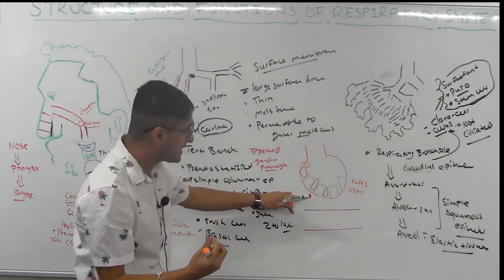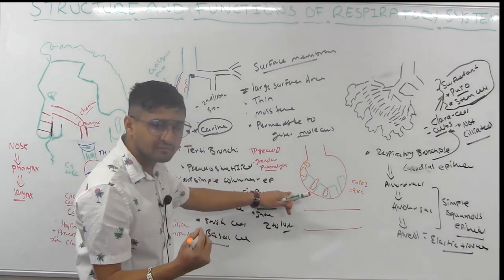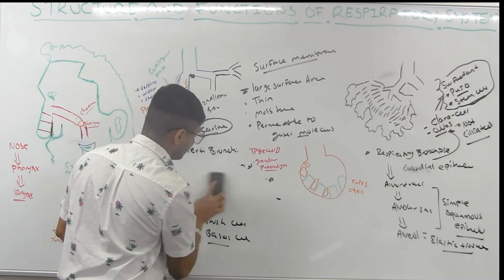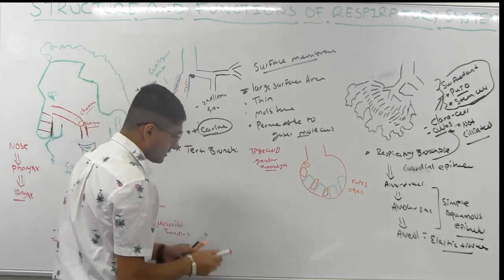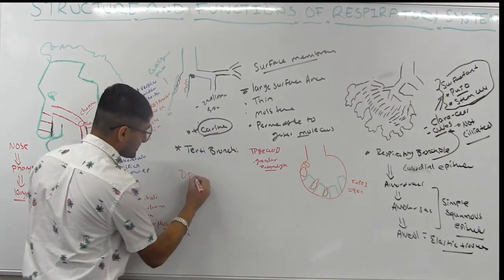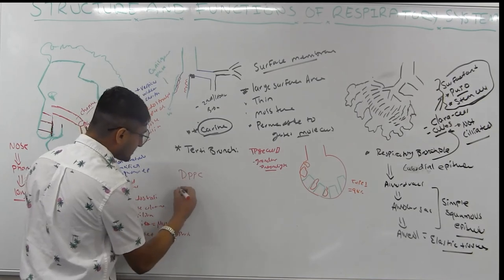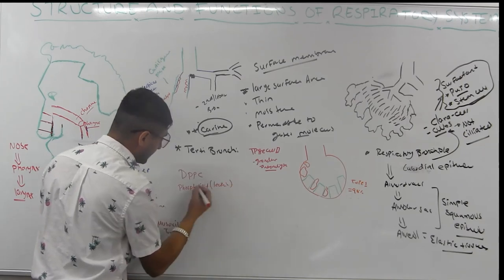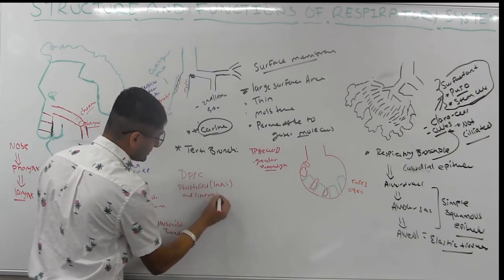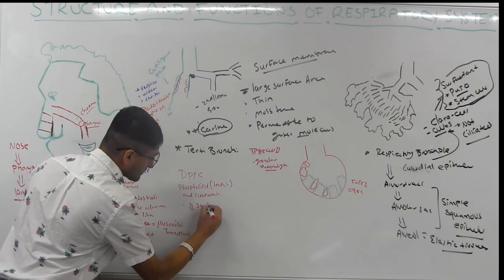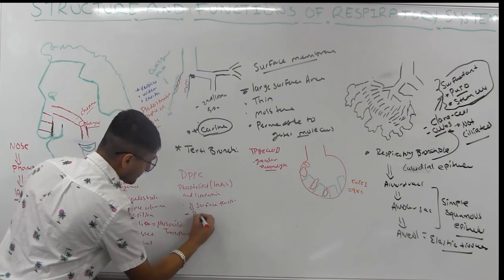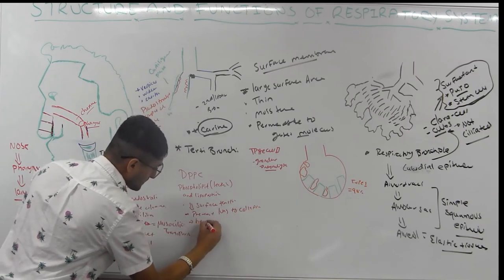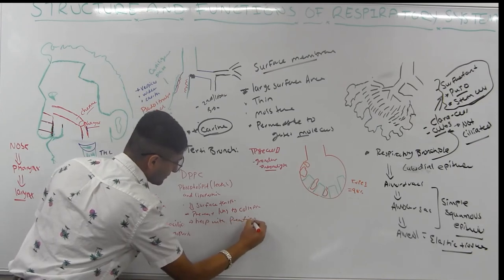Surfactant is a complex molecule — it's amphipathic, with both hydrophilic and hydrophobic portions. The main surfactant molecule produced is DPPC (dipalmitoylphosphatidylcholine). It contains phospholipids — specifically lecithin — and lipoproteins. Surfactant functions to reduce surface tension, prevent lung collapse, and help with breathing.